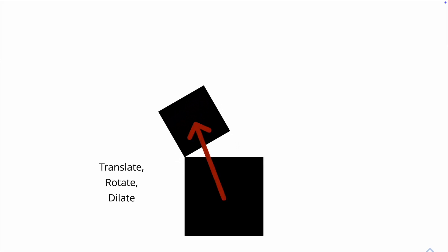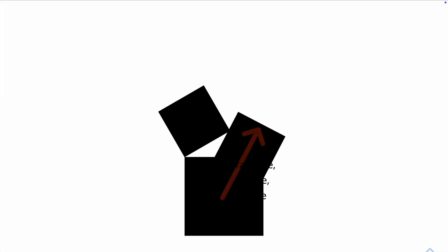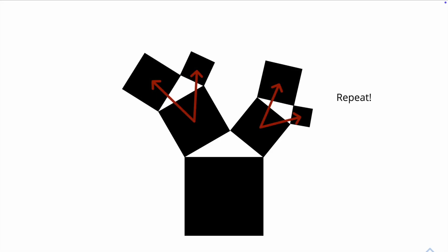For example we start with the main square, then apply the translation, rotation and dilation to obtain the top left square, and we do the same to obtain the other square on the top right side. We repeat this process to the new shapes and so on.